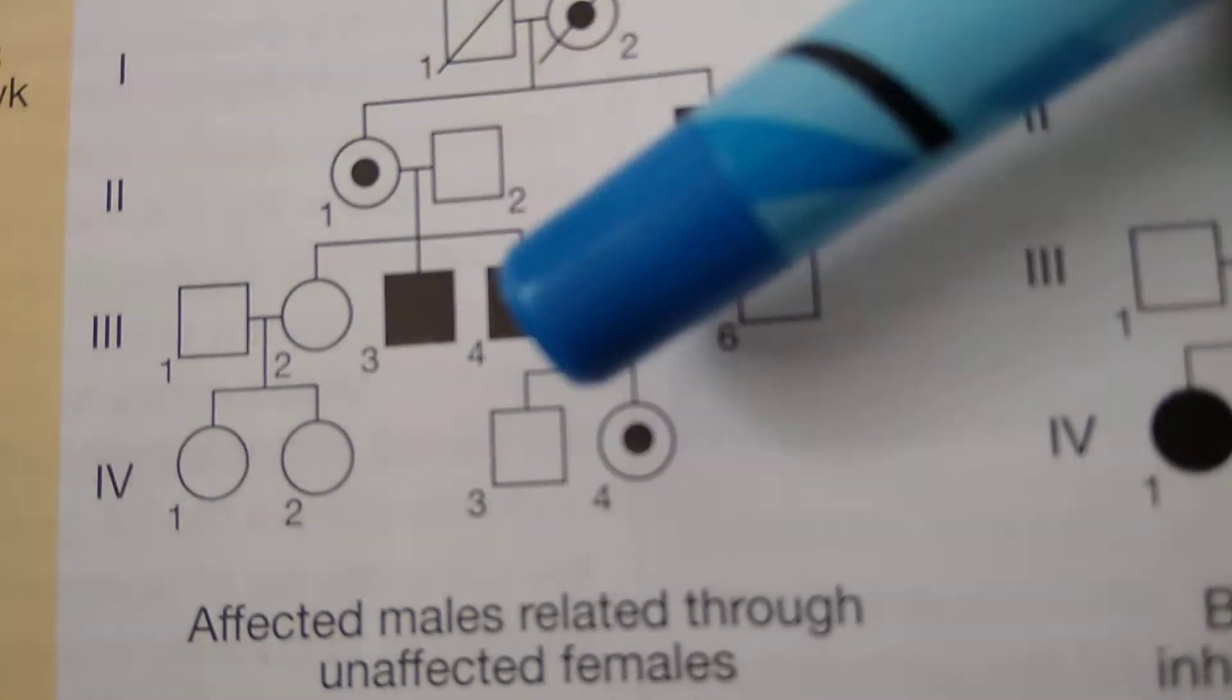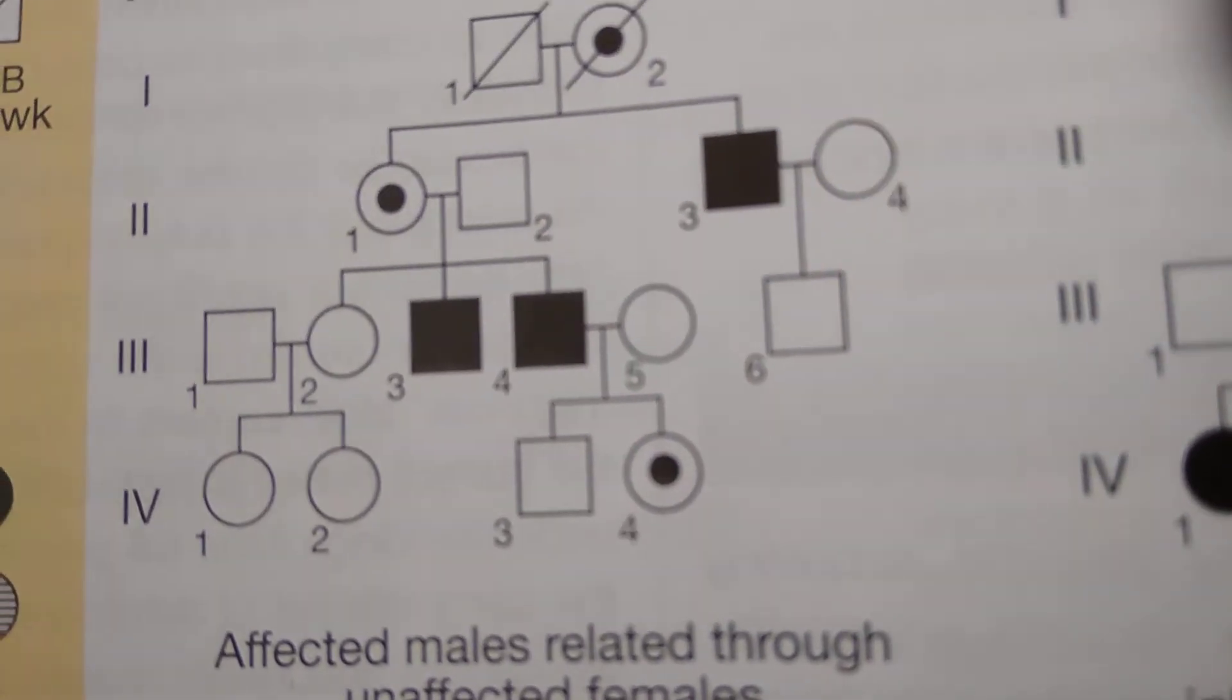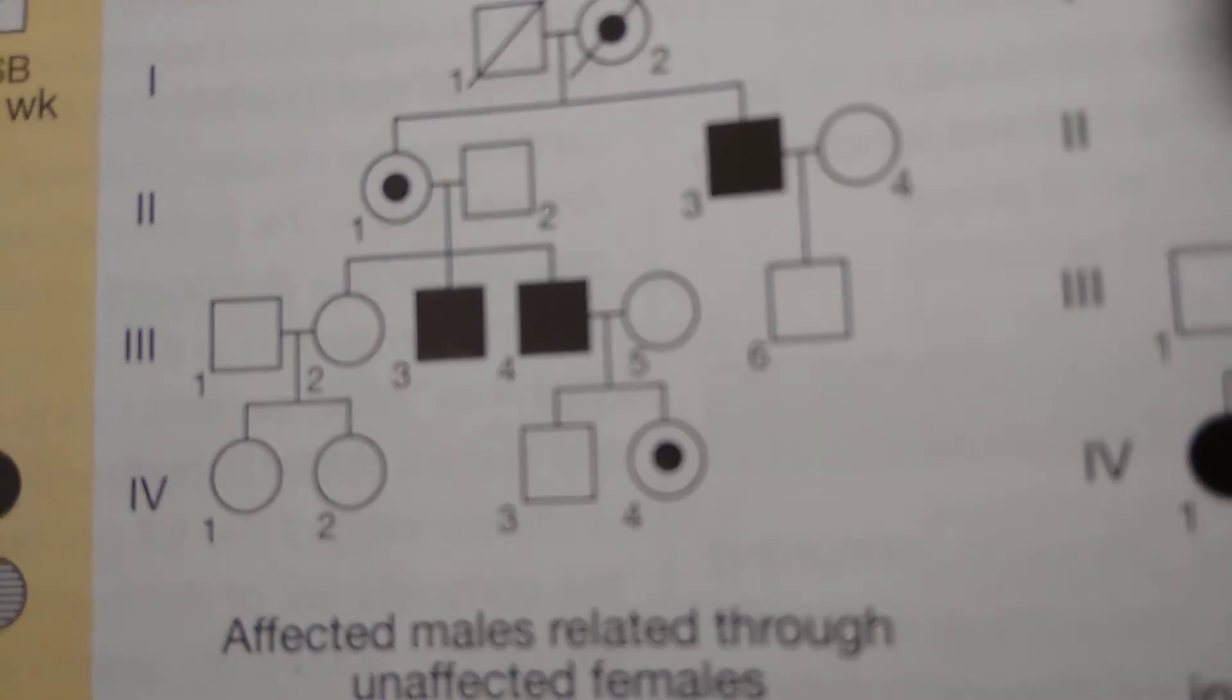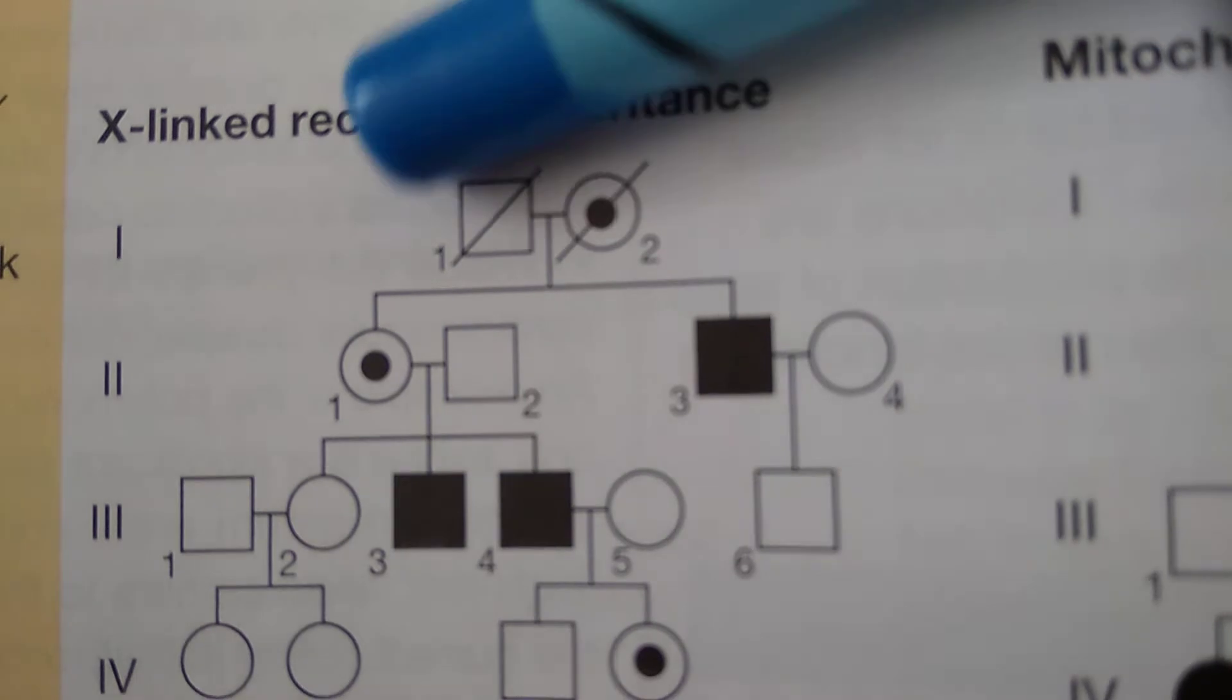So you can see how the males are affected. The males are not able to escape, isn't it? But the females are just able to carry it. So this gives you a clue - it is an X-linked recessive inheritance because females have two X chromosomes.